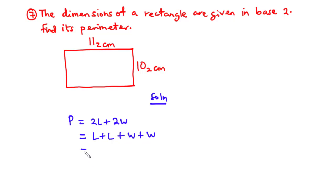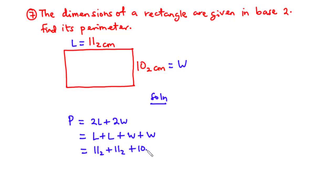Substituting the values: l is 11 base 2 and w is 10 base 2. So we need to compute 11 base 2 plus 11 base 2 plus 10 base 2 plus 10 base 2.